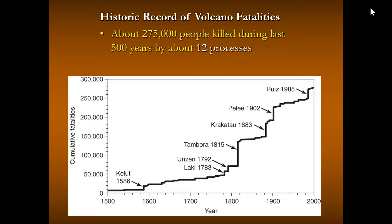Throughout this presentation, we'll cover most of the biggest eruptions in the last 500 years. Together, these have killed almost 300,000 people. There have been eruptions in Iceland, Japan, Indonesia, Nevado del Ruiz in Colombia, and Mount Pelée in the Caribbean — all in places where we see volcanic arcs and island arcs. Iceland also has a divergent boundary producing problems now and then.